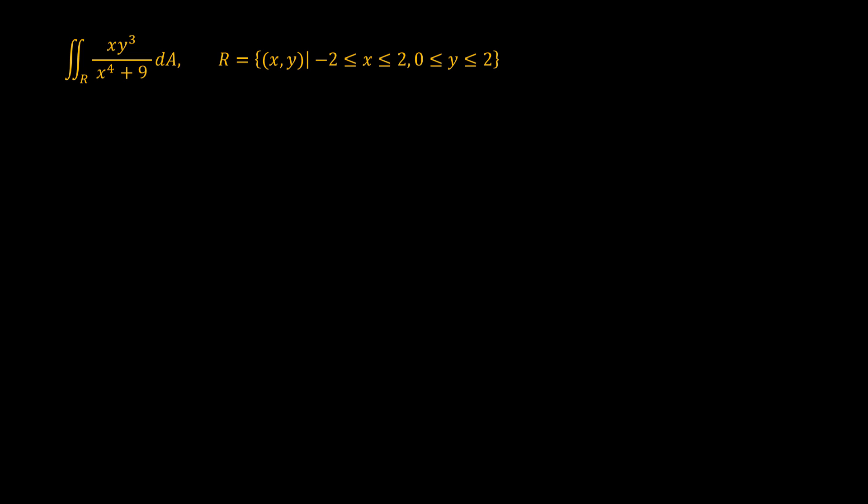In this video we want to learn how we can use symmetry to evaluate double integrals. Our first example is to find the double integral of x·y³ over (x⁴ + 9) dA, over the region where x is between negative 2 and 2 and y is from 0 to 2.